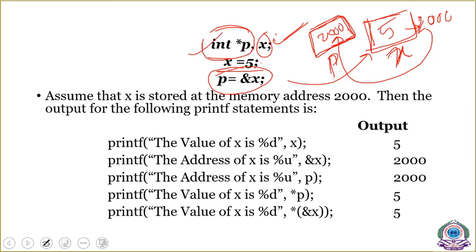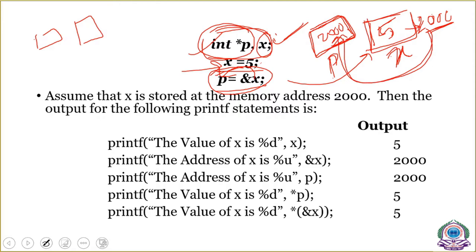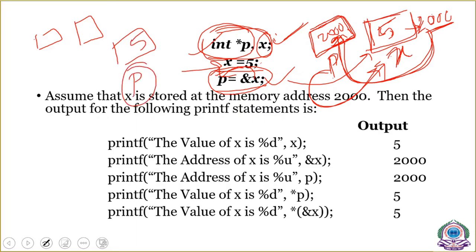When you declare int *p and x, only memory is allocated. When you assign x = 5, the value is stored at x. When you write p = &x, the address 2000 is stored into the pointer p — remember, the pointer only stores the address of the variable. Now a link between p and x is created. Once this link exists, I can access the value 5 by using the pointer p — using the pointer operator (star), which is why it is called the indirect operator.